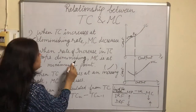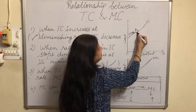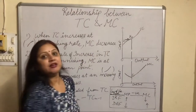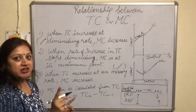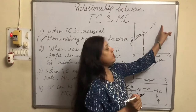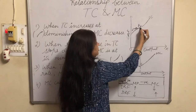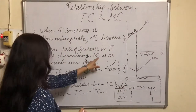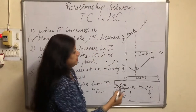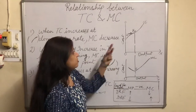The second point: when the rate of increase in TC stops diminishing — here TC was increasing at a diminishing rate, and it stops at point K, then starts increasing at an increasing rate, as I told you earlier in the law of variable proportions. So when TC stops increasing at a diminishing rate at that point, what happens to MC? MC is at its minimum point. When MC was falling, it comes to the minimum point — E point is the minimum point. So we have proved two points.